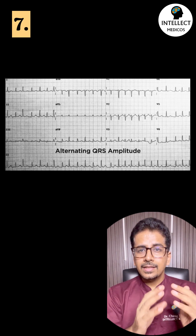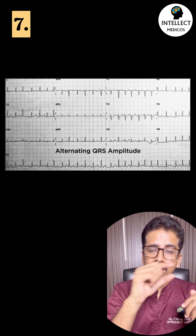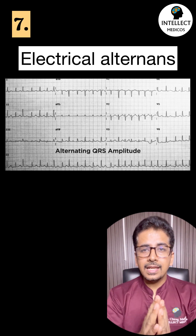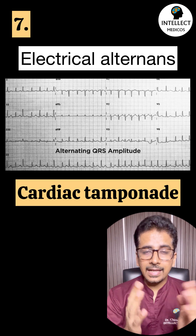Seventh: there is alternating QRS complex, which is called electrical alternans, seen in cardiac tamponade.